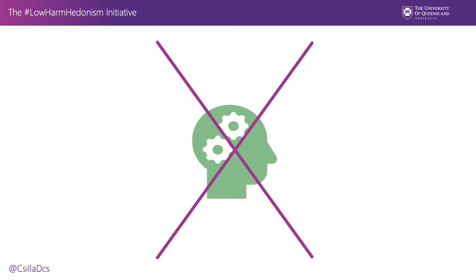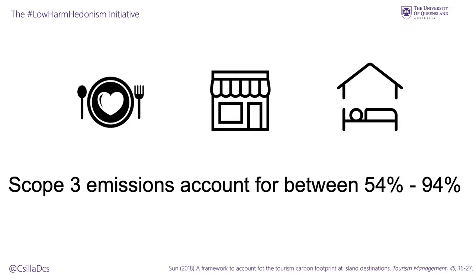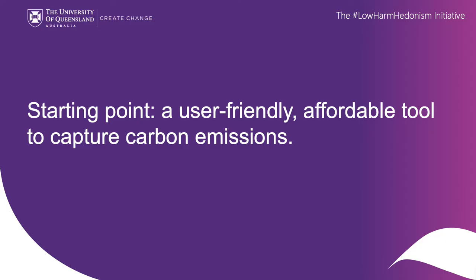Tourist businesses are not experts in carbon emission calculations. They usually report and manage their scope 1 and 2 emissions because energy consumption and on-site utility use are easy to control and monitor. Scope 3 emissions, on the other hand, receive little attention, yet they account for between 54% and 94% of emissions in the hotel, food, shopping, retail, and recreation context. So the starting point to reduce emissions is to identify an affordable and user-friendly tool to calculate carbon emissions.